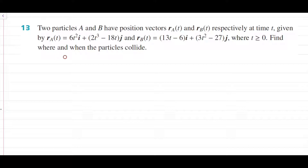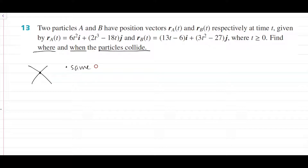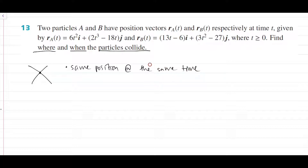They ask us to find where and when the particles collide. How do two particles collide with one another? That's basically when the i components for both particles and the j components for both particles equal one another. When two particles collide, they have to be at the same position at the same time. Later on when we go through intersection, it will be when the particles are at the same position, but not necessarily the same time. For now, we're going to go through collision first.